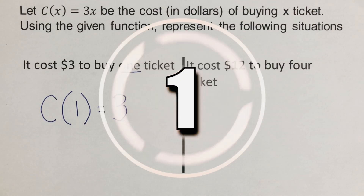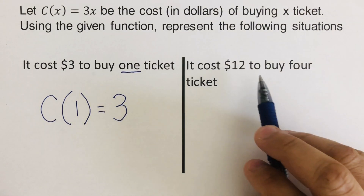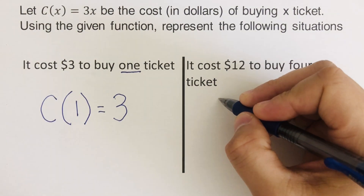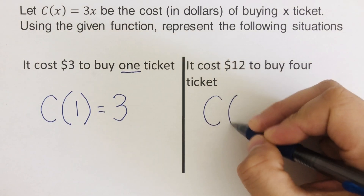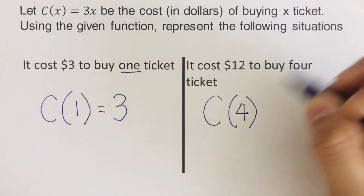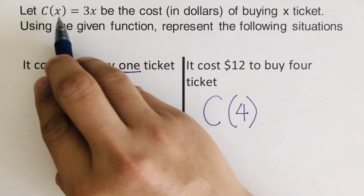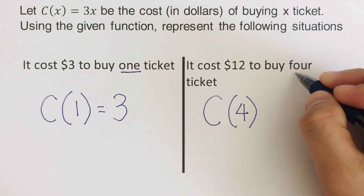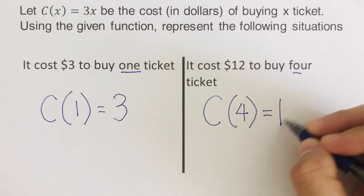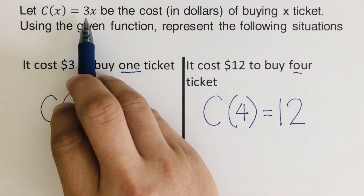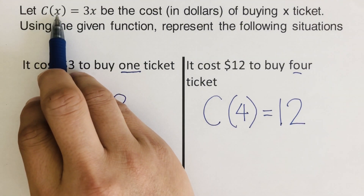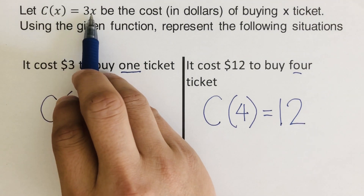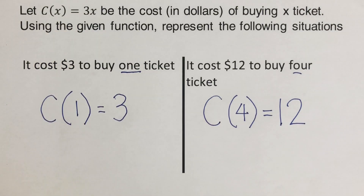So we go over the next problem: it costs $12 to buy four tickets. I write c of four, because the x represents the number of tickets — that's four tickets — and c of four is equal to 12. That makes sense because if x is four, you bought four tickets, and three times four is 12.